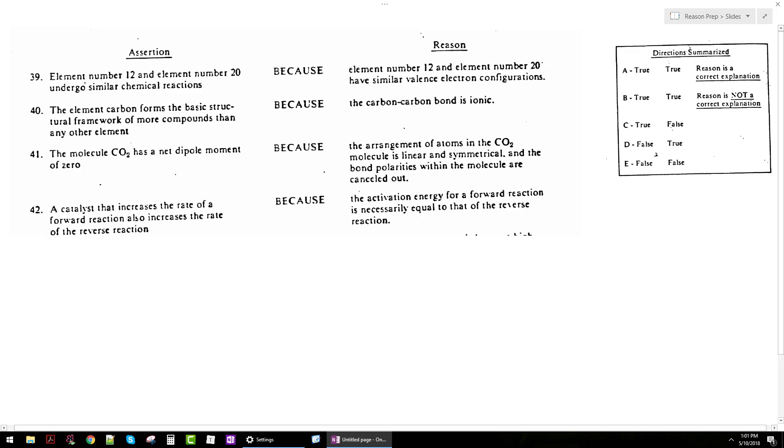Starting with 39: element number 12 and element number 20 undergo similar chemical reactions. Pull out a periodic table - element 12 is magnesium and element 20 is calcium. They are both group 2 elements in the same group. Typically, elements in the same group exhibit very similar chemical behavior, so this first statement is indeed true.